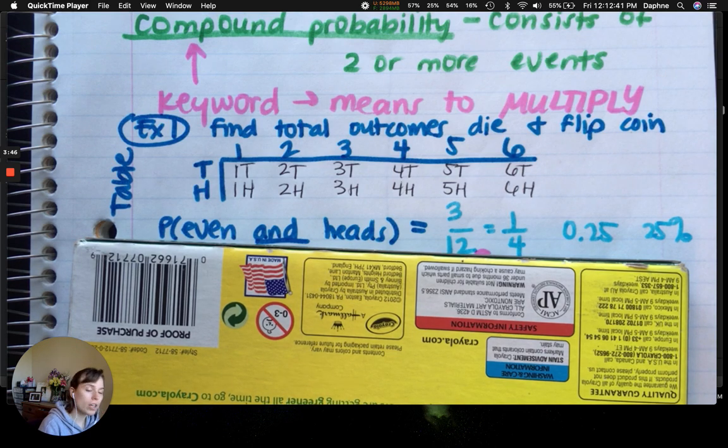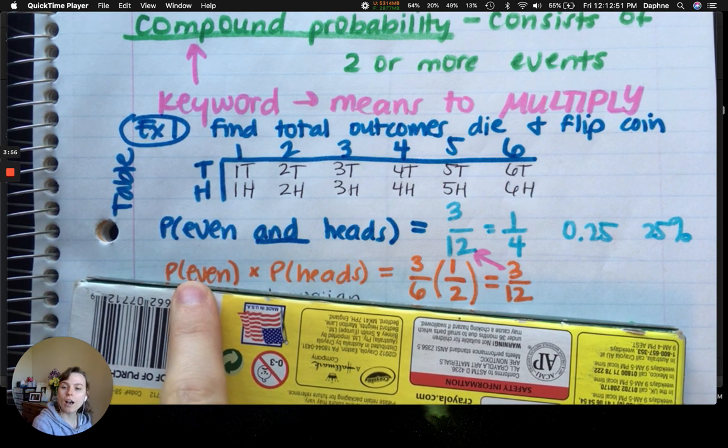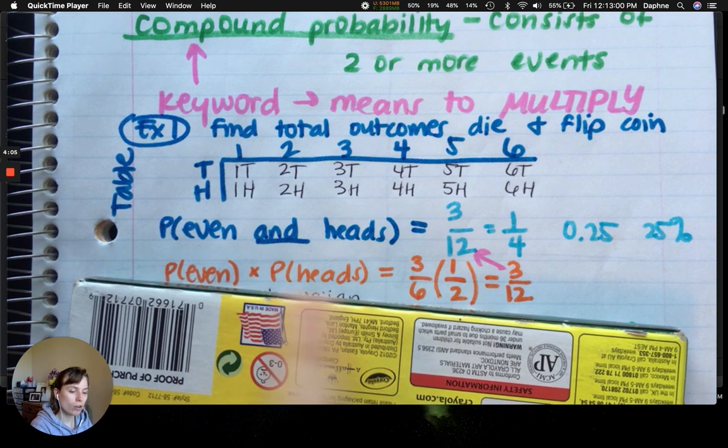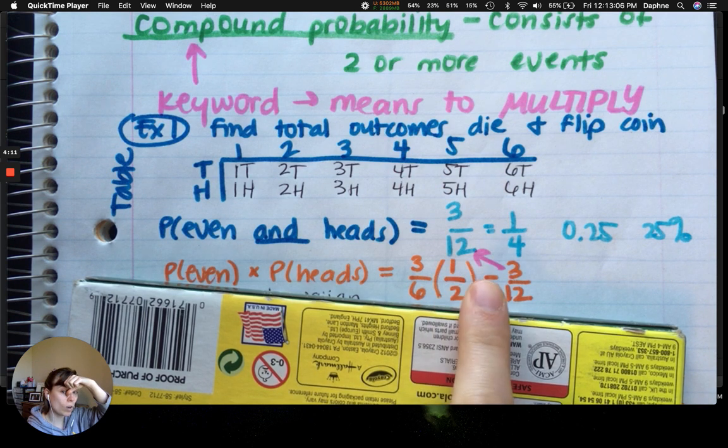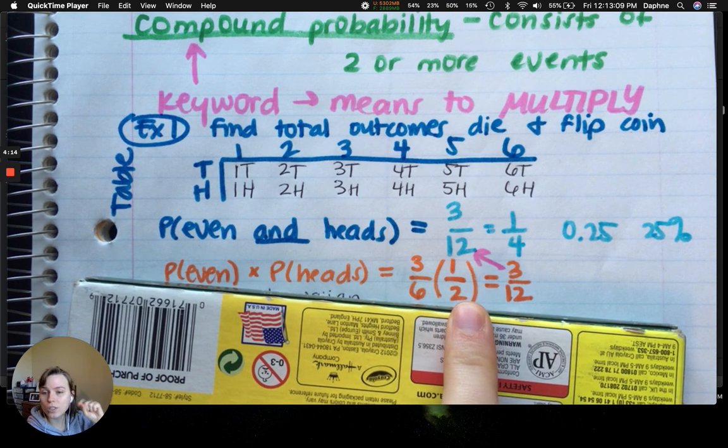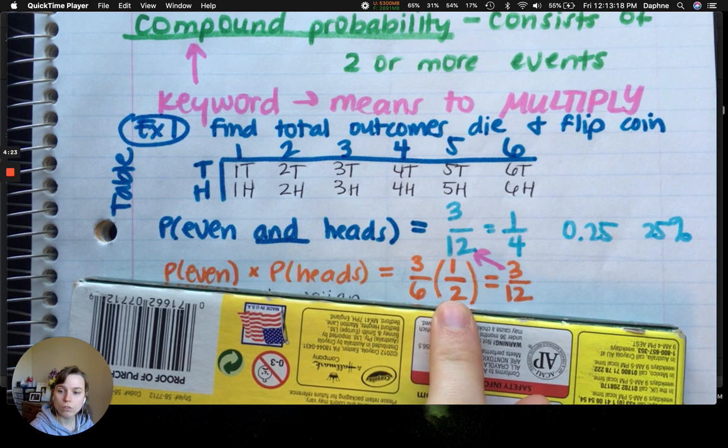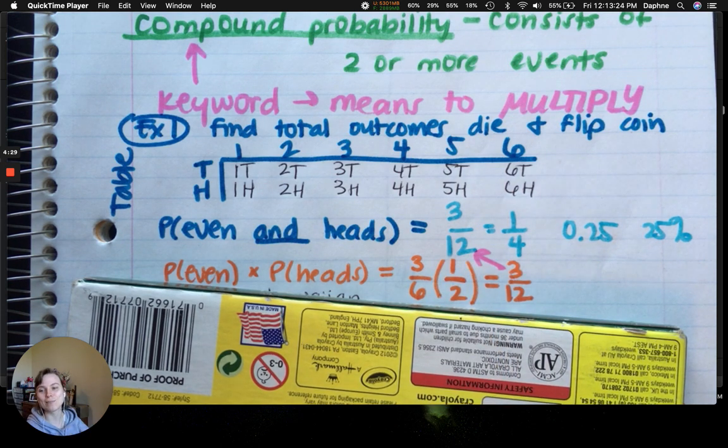Now there's a compound way to do this as well using multiplication. So instead of figuring out even and heads at the same time using my table, I could figure out the probability of even by itself and then multiply that by the chance of flipping a heads by itself. So even numbers, there are 3 even numbers out of 6 total in a die. And there is 1 head out of 2 head or tails, so 2 sides of a coin. So that's what I'm going to multiply. When I multiply this, I'm going to do 3 times 1, which is 3. 6 times 2, which is 12. And then that 3 twelfths brings me back to where I was. Simplified, get the decimal, get the percent, and you're good to go.